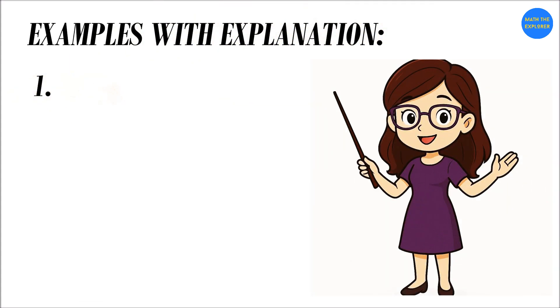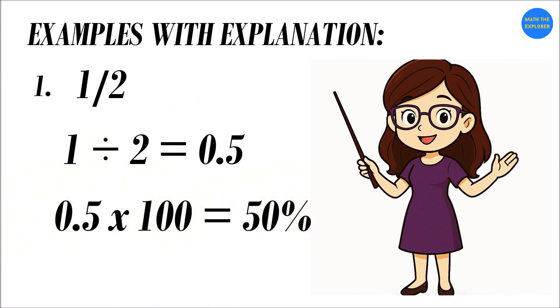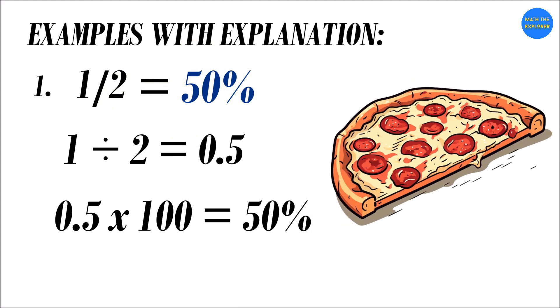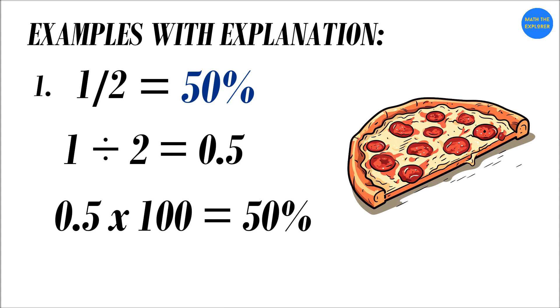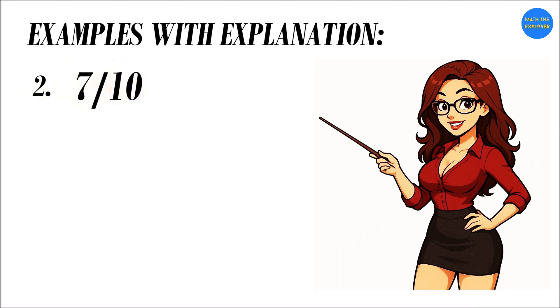Let's try more examples together. One-half. Divide numerator one by denominator two. One divided by two equals 0.5. Next, change decimal to percent by multiplying by 100. 0.5 times 100 equals 50 percent. So, half equals 50 percent. Think of half a pizza equals 50 percent of the whole pizza.